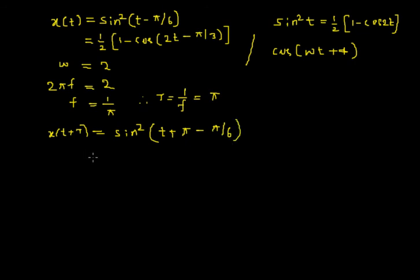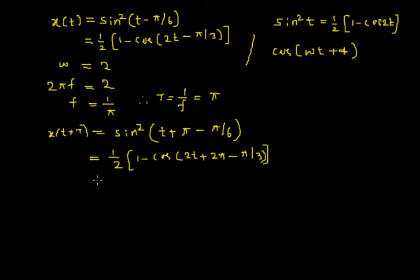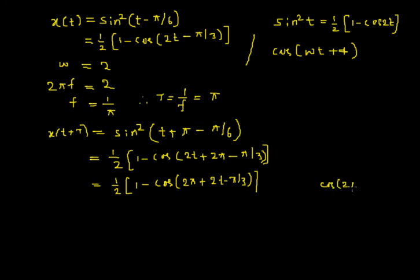Expanding this result as 1 by 2 into bracket 1 minus cosine of 2t plus 2 pi minus 2 pi by 6, I get pi by 3. I will rearrange the terms to get 1 by 2 into bracket 1 minus cosine of 2 pi plus 2t minus pi by 3, so that I can use the trigonometric result cosine of 2 pi plus theta which is equal to cos theta.